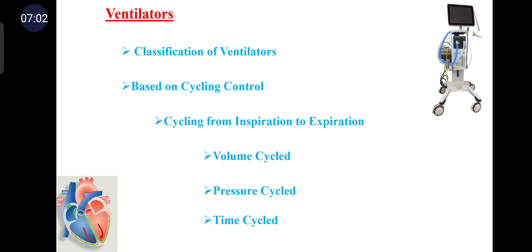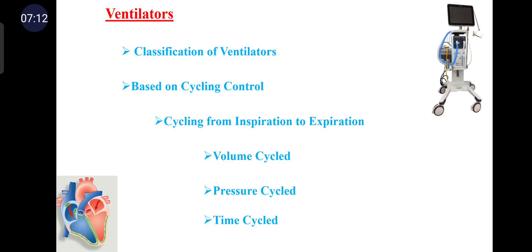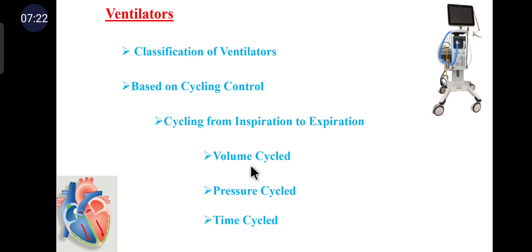In a pressure cycle ventilator, the expiratory phase begins after a preset pressure has been attained. In a time cycle ventilator, the expiratory phase is initiated after a preset time period for the inspiratory phase has elapsed.